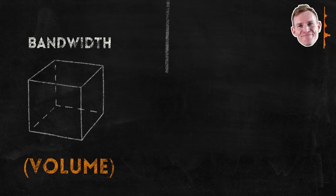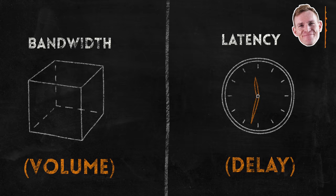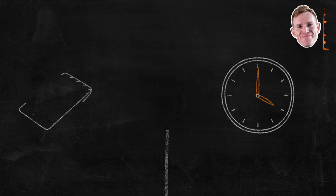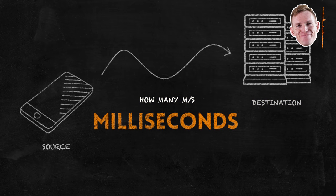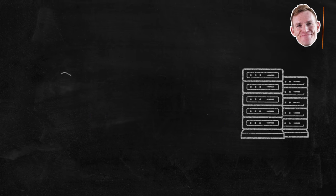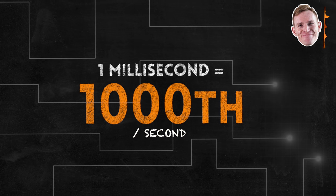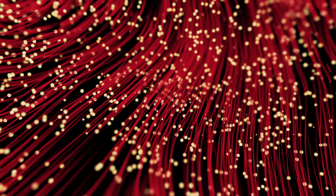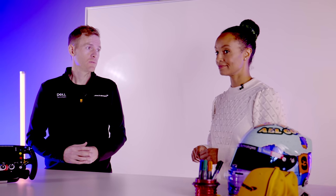While bandwidth is about volume, latency is about time — more specifically about the delay. So how long it takes for data to travel from its source to its destination, and it's measured in milliseconds. A millisecond is one thousandth of a second — incredibly small. In optimal conditions, data can travel at the speed of light, but in many situations data travels much, much slower. It does make a difference.